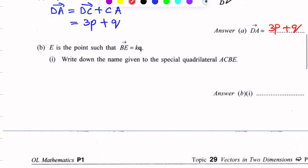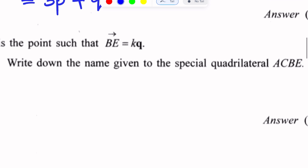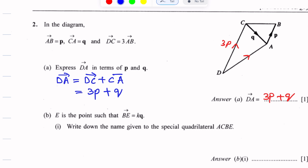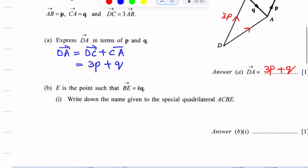Now for part B of this question: E is a point such that BE equals KQ, where K is a scalar and Q is a vector. So BE is a scalar multiple of Q.